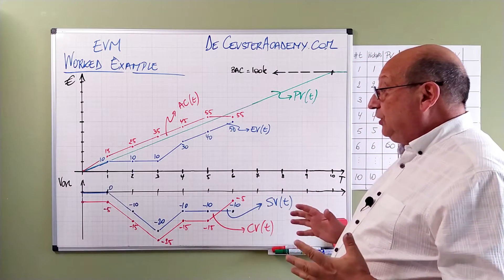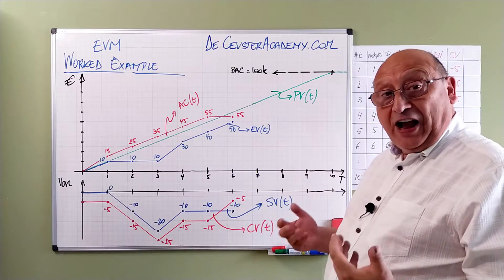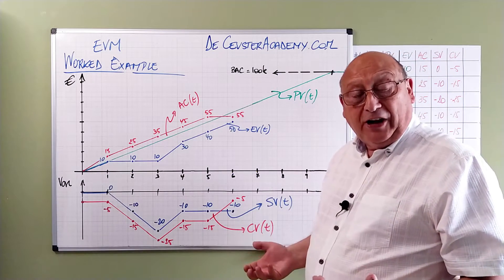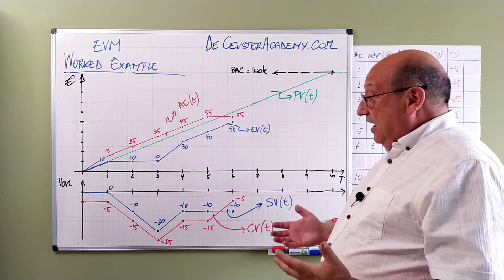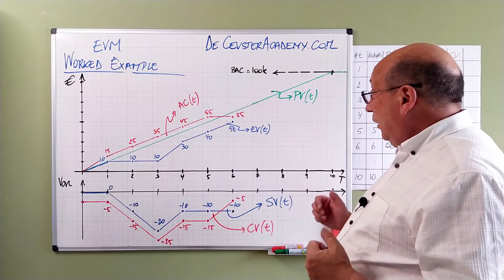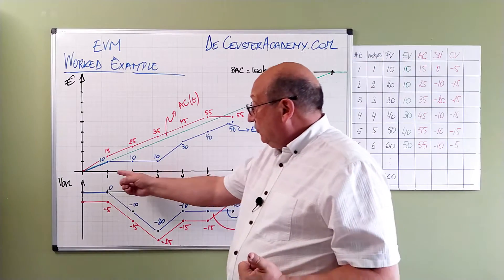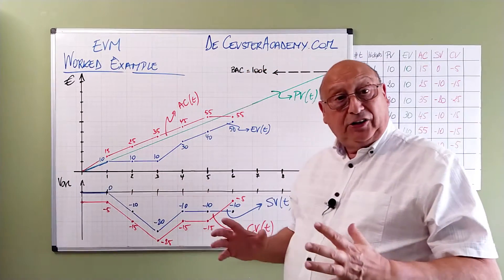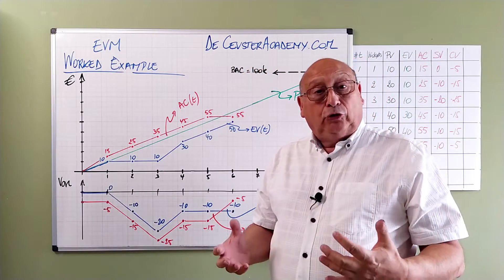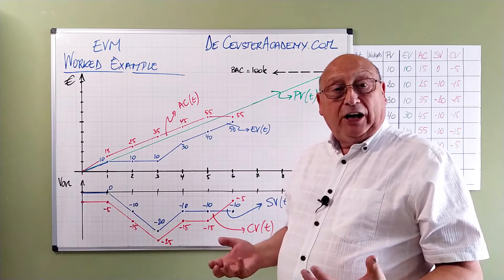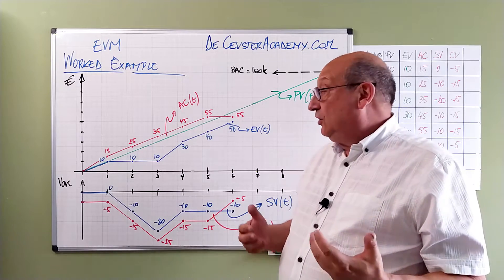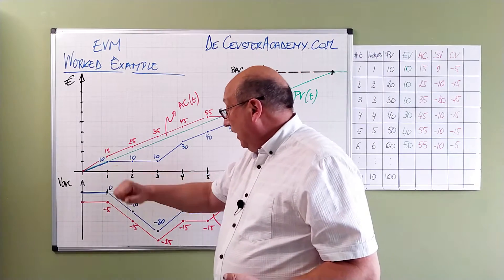In addition what I put here are the values that I received from the project managers. I have the earned value and when I look at the earned value I see after one period I did a great job. I produced the number of widgets as planned. So the earned value at this moment is equal to the planned value.